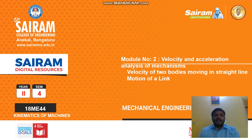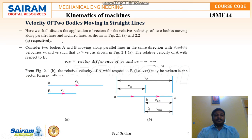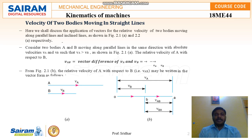Only then can we identify the exact velocity and acceleration of that particular mechanism. In this video we are going to discuss about the velocity of two bodies moving in a straight line, and how motion in a link takes place. We will cover the applications of vectors for the relative velocity of two bodies along parallel or inclined lines.